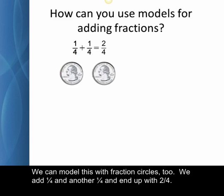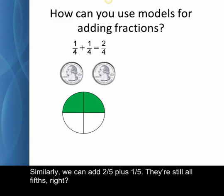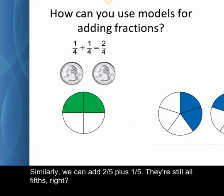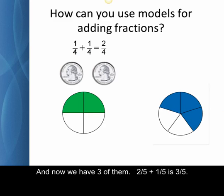We can model this with fraction circles, too. We add one-fourth and another one-fourth and end up with two-fourths. Similarly, we can add two-fifths plus one-fifth. They're still all-fifths, right? And now we have three of them. Two-fifths plus one-fifth is three-fifths.